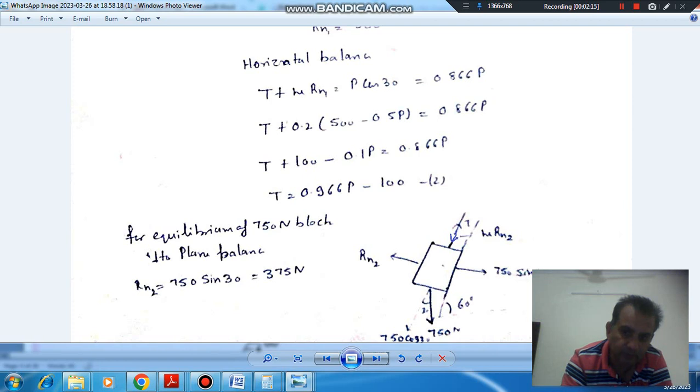This is the orientation of the angle, the vertical will be 30. So this weight can be resolved to components. One is along the plane, 750 cos 30, and other is perpendicular to plane, 750 sin 30, and R_N2 will be the normal reaction.